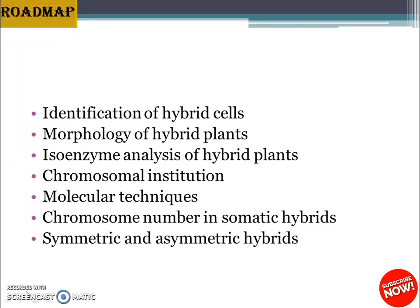The third method is chromosomal constitution. The number of chromosomes present in hybrid cells can be counted directly, providing information about the ploidy state. Somatic hybrids are expected to possess chromosomes equal to the total number of chromosomes originally present in the parental protoplasts. The presence of chromosomal markers is also useful for the genetic analysis of hybrid cells.